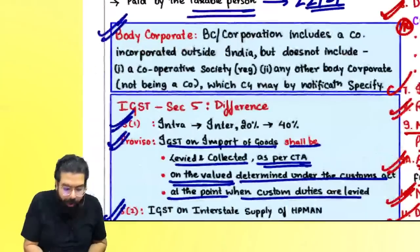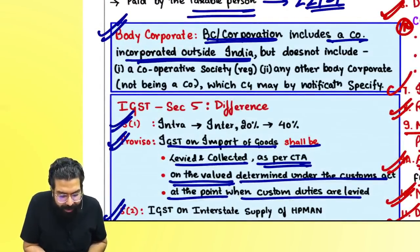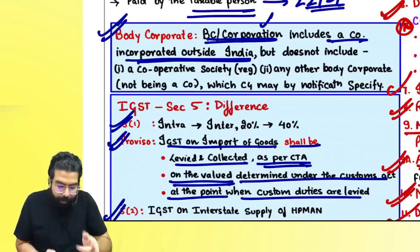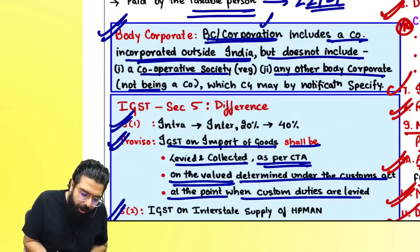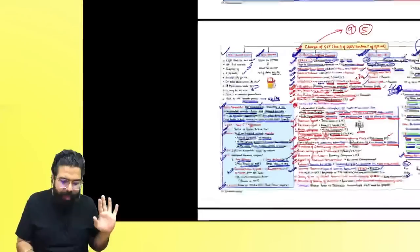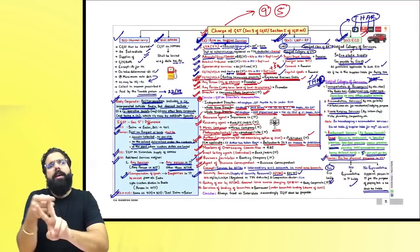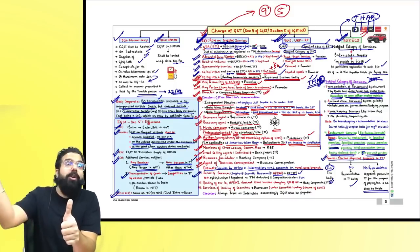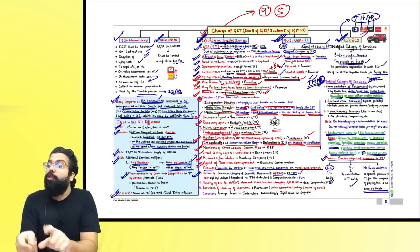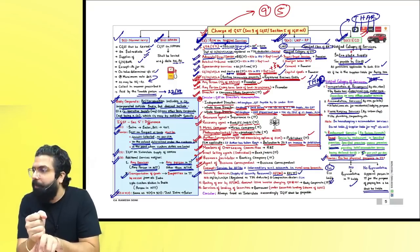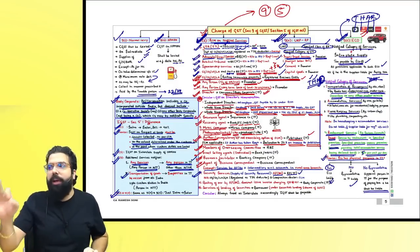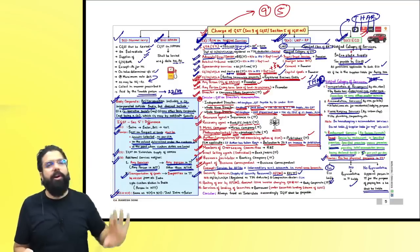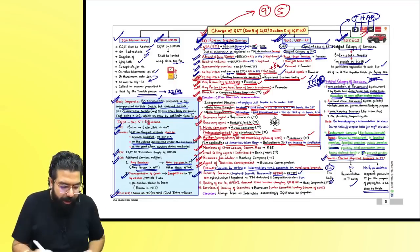Body corporate includes: public company, private company, government company, and companies incorporated outside India (e.g., Microsoft Inc. in India). Body corporate does not include cooperative societies, societies, or any person notified by the government as not being a body corporate. Section 9(3) is the most important for your exam, and Section 9(5) is also very important due to two amendments: transportation of passengers now covers omnibus and any other motor vehicle, and restaurant services through Zomato/Swiggy are now brought under Section 9(5) with the e-commerce operator made liable, except for restaurants in specified premises with declared tariff greater than Rs. 7,500.